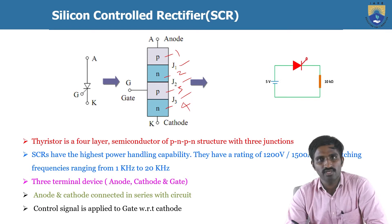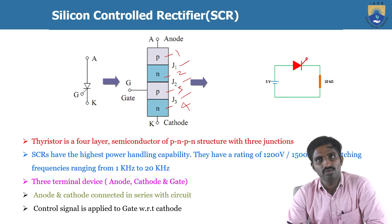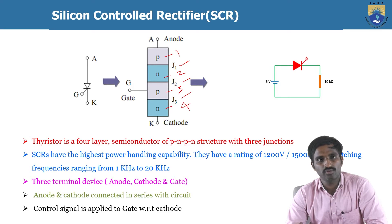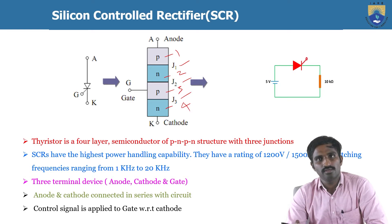One advantage of the SCR over the diode is its high power handling capability. Usually, the voltage and current ratings are up to 1200 volts and 1500 amperes, with a switching frequency from 1 kHz to 20 kHz. The three terminals are: anode, cathode, and gate. The anode and cathode are connected in series with the circuit, and the gate signal is used for control purpose.